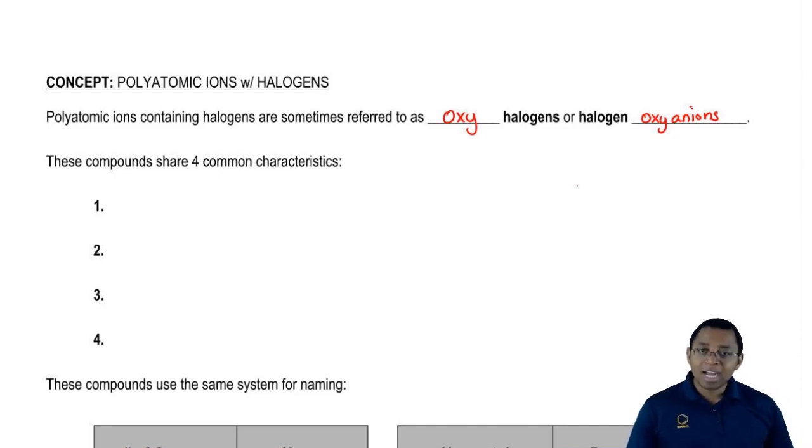These compounds share four common characteristics. First, they contain one halogen. Remember, when we say halogen, we mean group 7a.